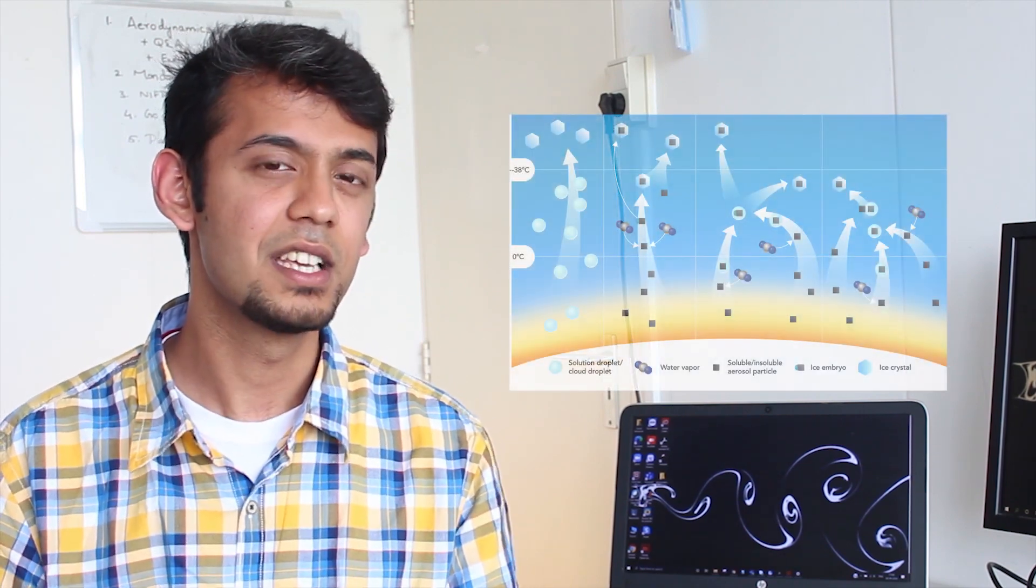Just like how water vapor needs cloud condensation nuclei to form cloud droplets, for ice to form, there has to be an ice nucleus. Without an ice nucleus, water droplets can remain as liquids even up to temperatures as low as minus 40 degrees Celsius. This is the supercooled state.